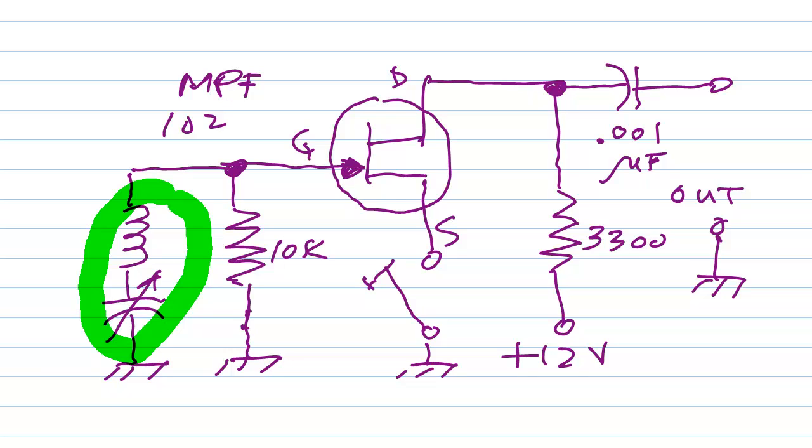And then I would pick that component. This would be a 365 picofarad variable capacitor. And this right here would be whatever inductance is required. So roughly in the middle of this range, or at about 180 picofarads, you would get a frequency of 7.035 megahertz.